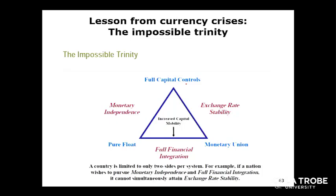Depending on what is most important for your country, you choose the relevant exchange rate regime. For example, China controls their exchange rates because for the past few decades, as a developing country, their main objective was to increase exports. If you want to focus on exporting, you want a cheap currency so that people buy your goods and services, and you also want a stable exchange rate so people want to deal with you. Australia has a pure float currency regime because we are a free financial market and we let market forces determine currency value.